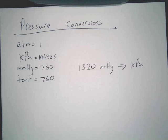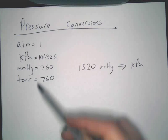So we're going to convert 1520 millimeters of mercury to KPA. All this is really basic dimensional analysis that you've been doing for a long time. The only thing you have to remember are these conversions.